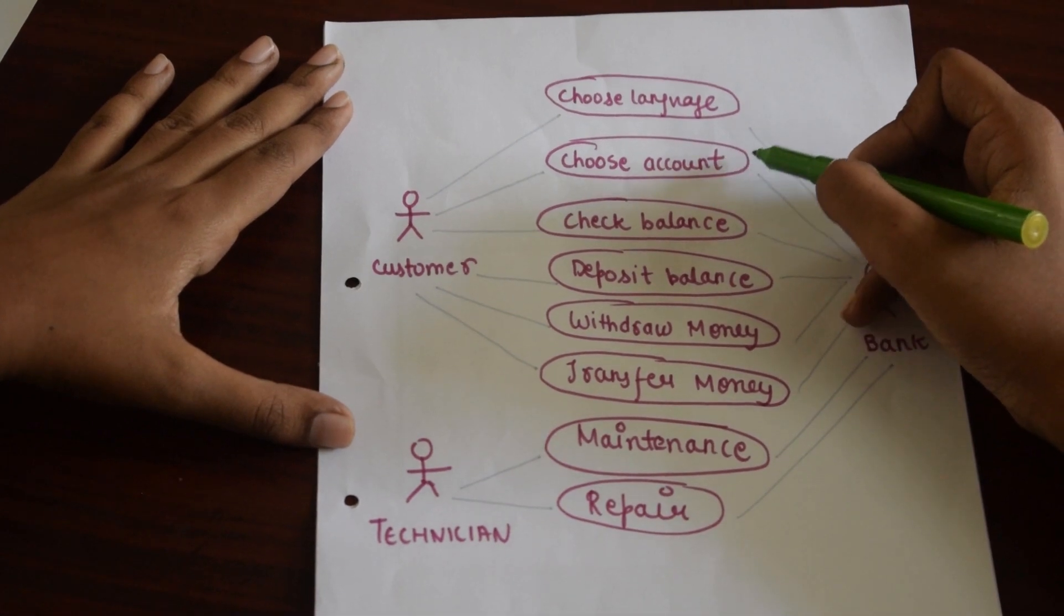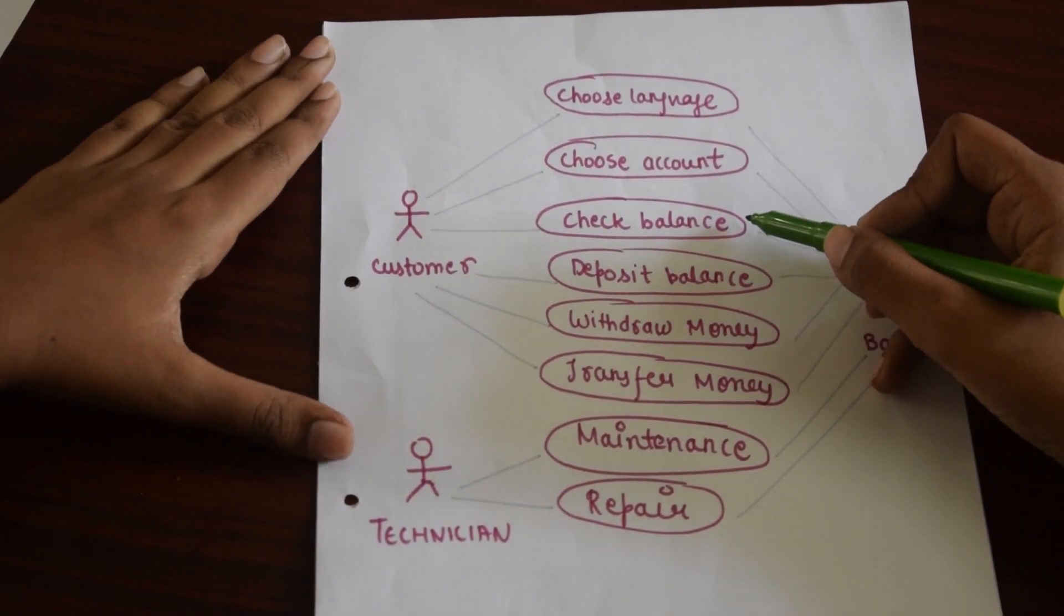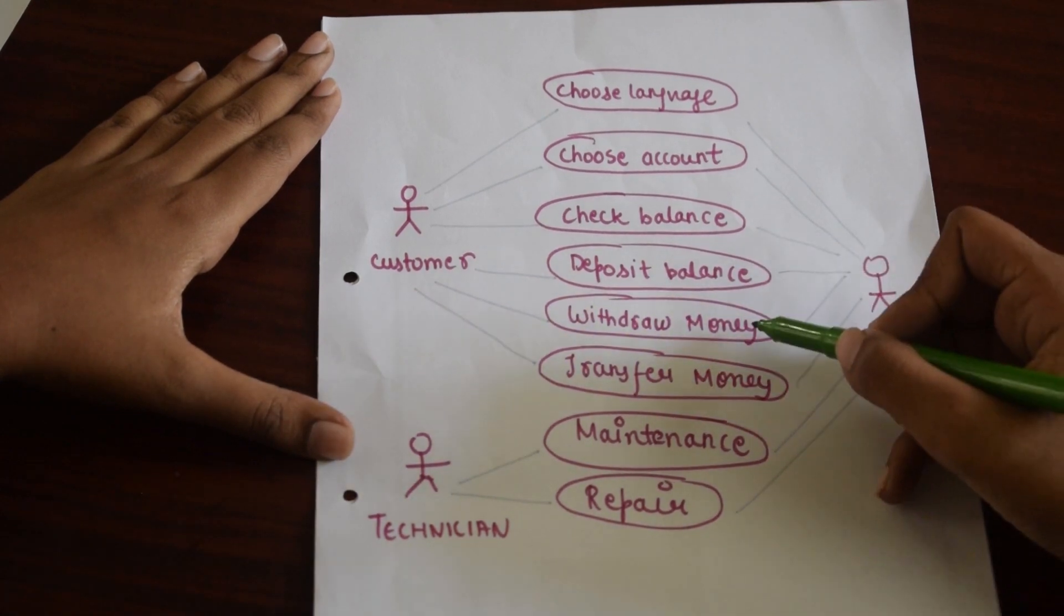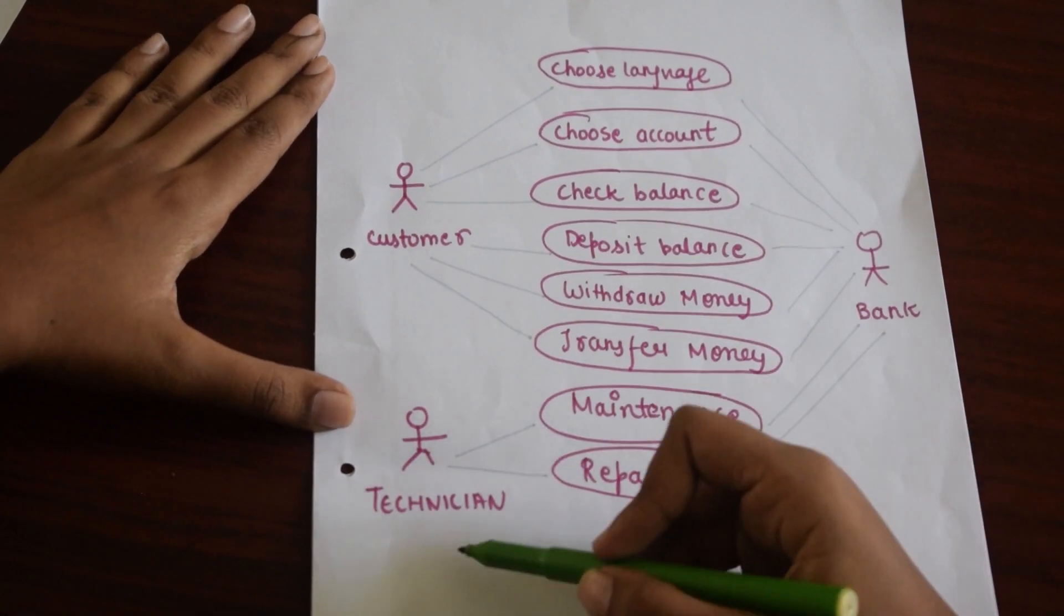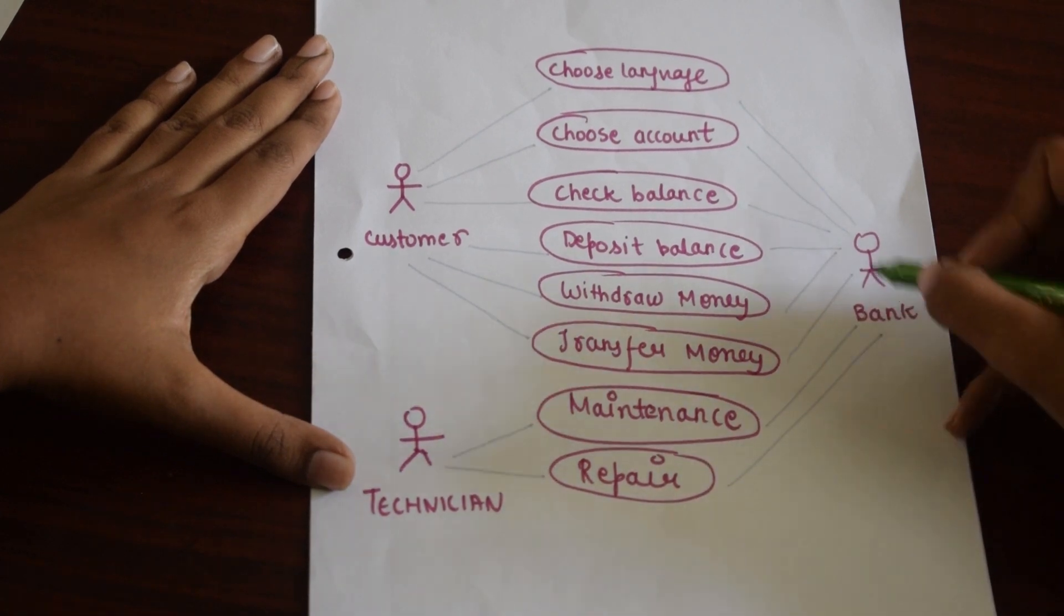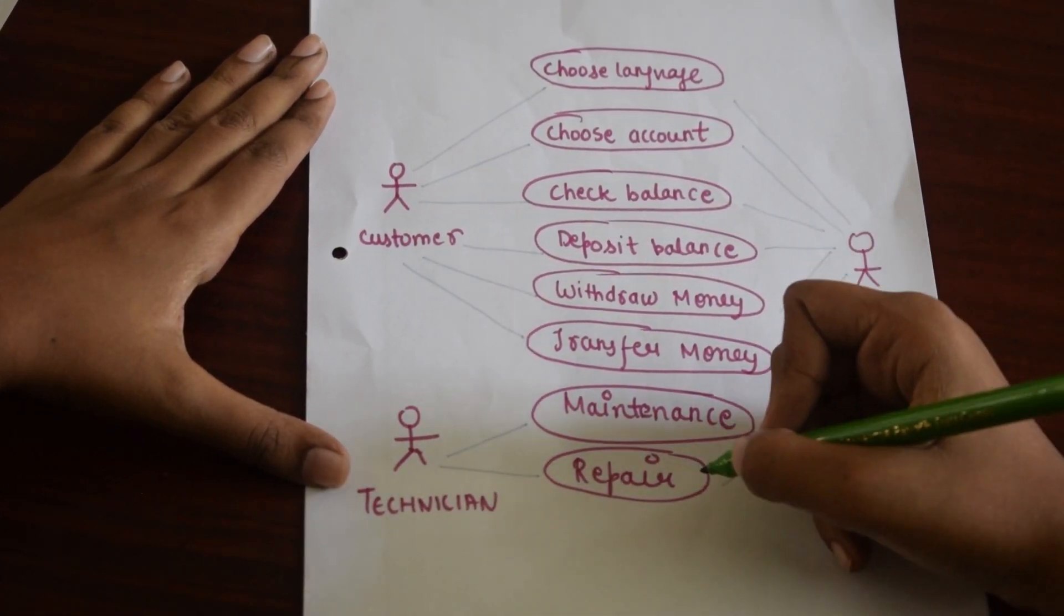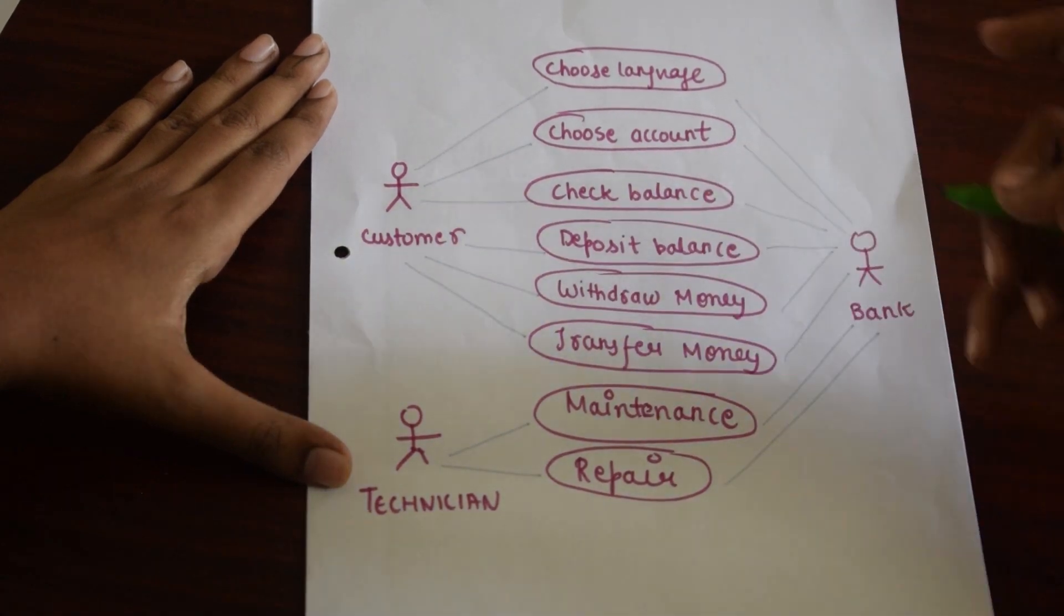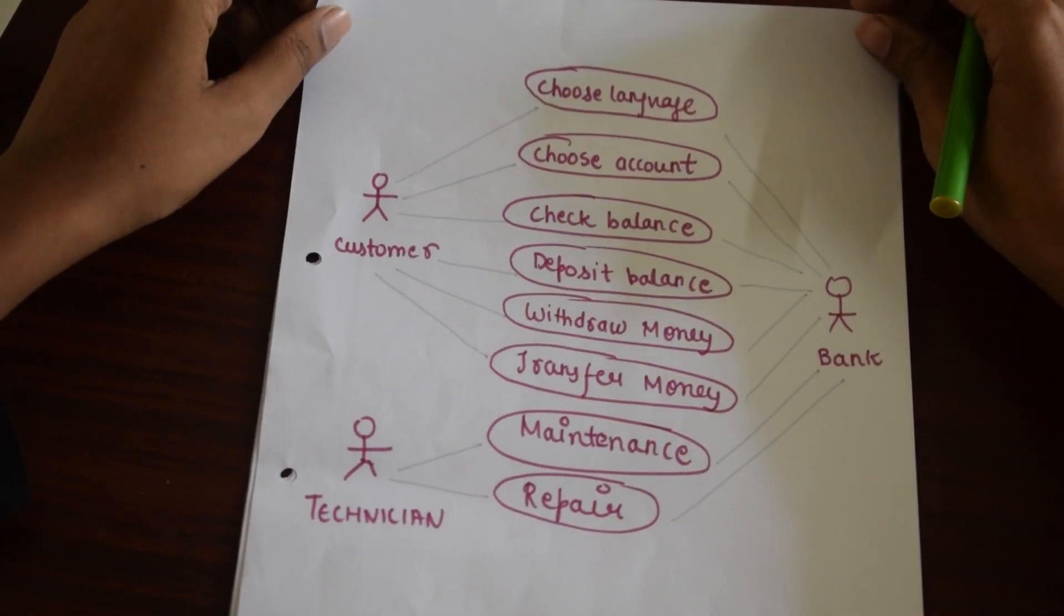A customer can choose the language Hindi or English, choose account type whether savings or fixed deposit, check balance, deposit money, withdraw money, and transfer money. A technician is responsible for maintenance and repair, and the bank can interact with all these use cases. Now, we will draw an activity diagram corresponding to one use case, that is withdraw money.